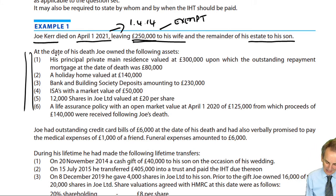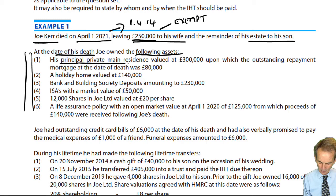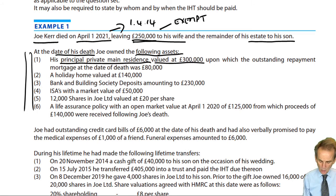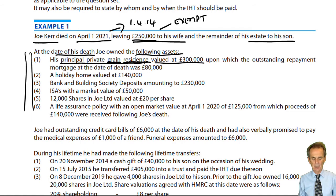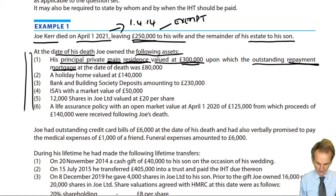What did Joe do in terms of his will? Leaving £250,000 to his wife — a transfer to a spouse, which is exempt. The remainder of his estate goes to his son, which will form the basis of the chargeable estate. In calculating the chargeable estate, we list the assets held by Joe at the date of his death. The only exemption available on death in our syllabus is transfers to spouses or civil partners. So the £250,000 to his wife is deducted, and the chargeable estate — the bit that goes to his son — is what will require the tax computation. At the date of his death, Joe owned the following assets, including his principal private main residence valued at £300,000.